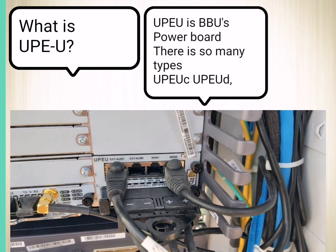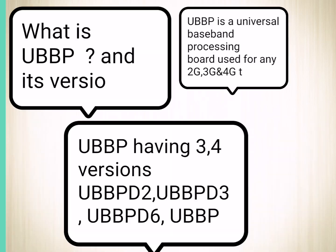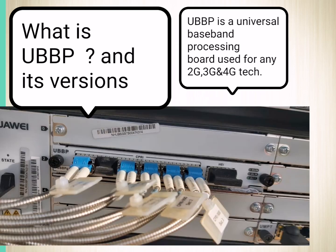What is UPEU? It is a power board. The UC and UD versions are used to provide power to the BBU. Next is the UBBP signal processing board, which is used for 2G, 3G, and 4G technology. You can see the UBBP board with fiber optics connected to it.